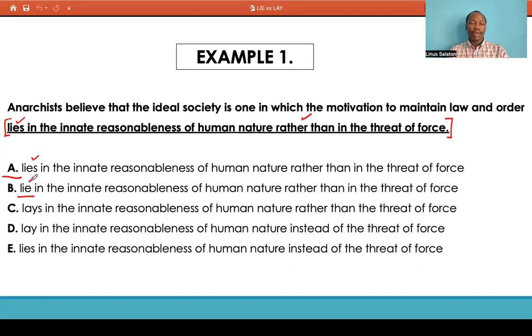Let us look at B. Law and order lie in the innate reasonableness of human nature rather than in threat of force. Again, we are talking about motivation and the motivation here is in singular form, that's why we are going with lies instead of lie which is plural. So for that reason, eliminate B.